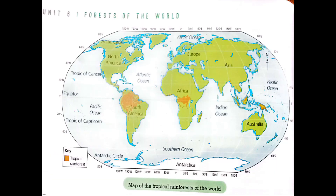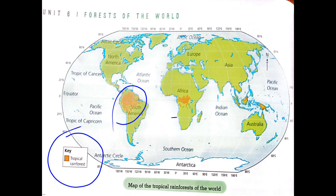We have a map showing you the tropical rainforests of the world. If you observe its legend, you will see that the brown color represents the tropical rainforest.